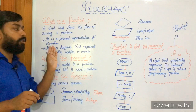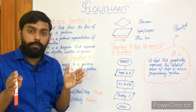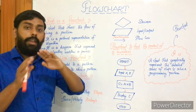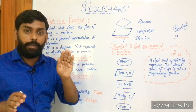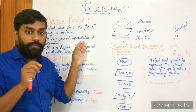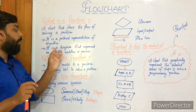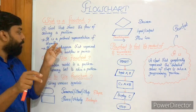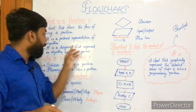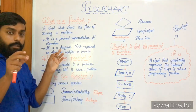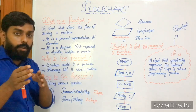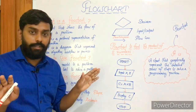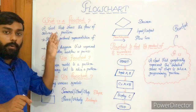Some additional points: flowchart is a pictorial representation of algorithm. It has a direct connection with algorithm — you know how to construct an algorithm, writing step by step instructions to solve a programming problem. Algorithm is in text format but flowchart is in graphical format. It is a diagram that represents an algorithm, flow, workflow, or process — in short, a graphical representation of algorithm.